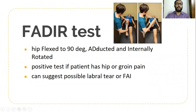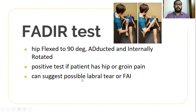Coming to the next one, it is flexion adduction and internal rotation (FADIR), which is more suggestive than the FABER test — flexion abduction and external rotation — in hip pathology. If flexion adduction and internal rotation is positive, there may be a chance of labral tear or femoroacetabular impingement.